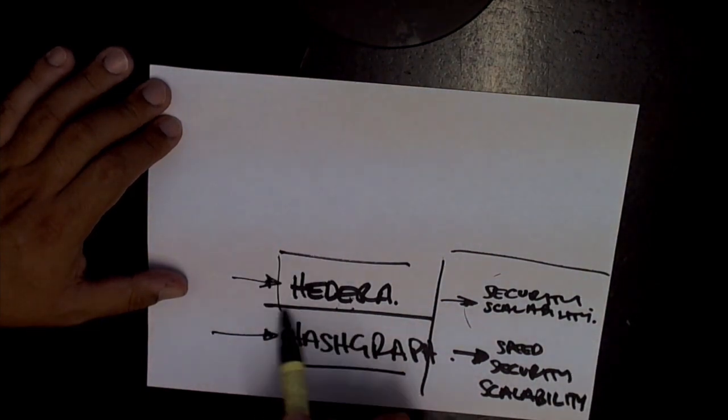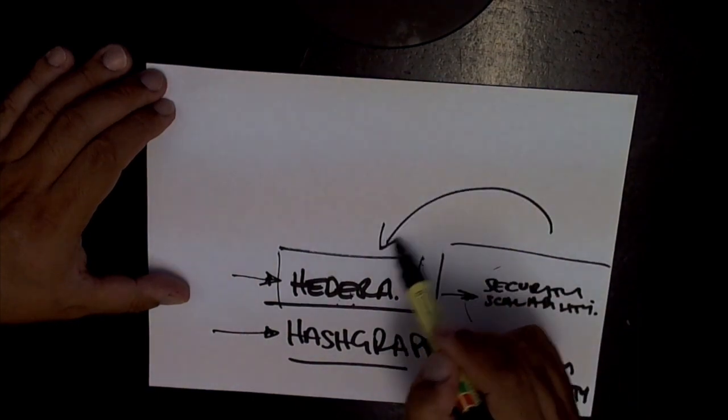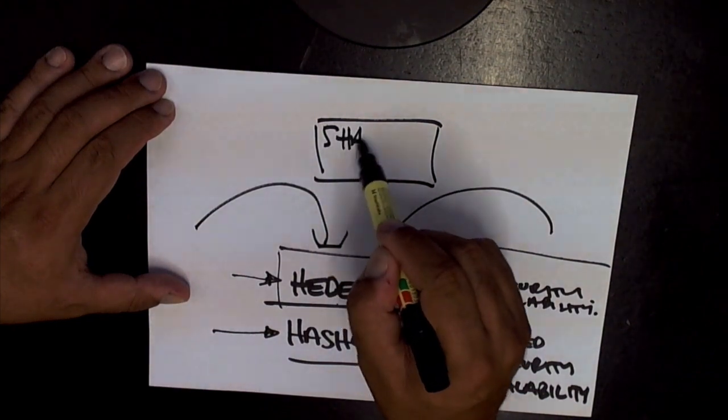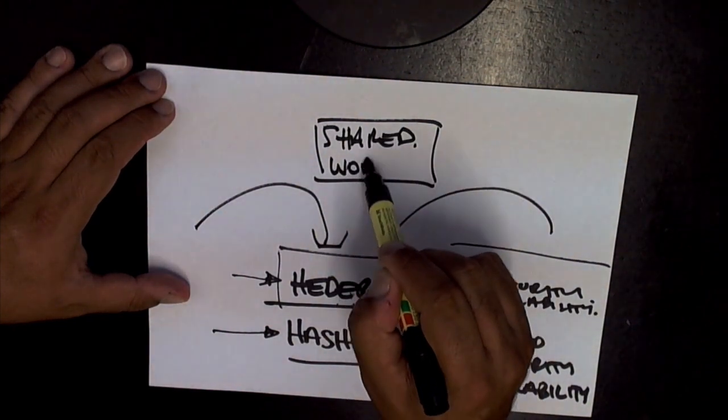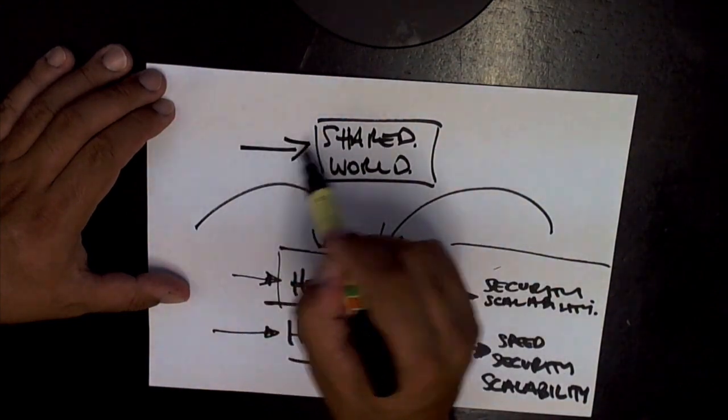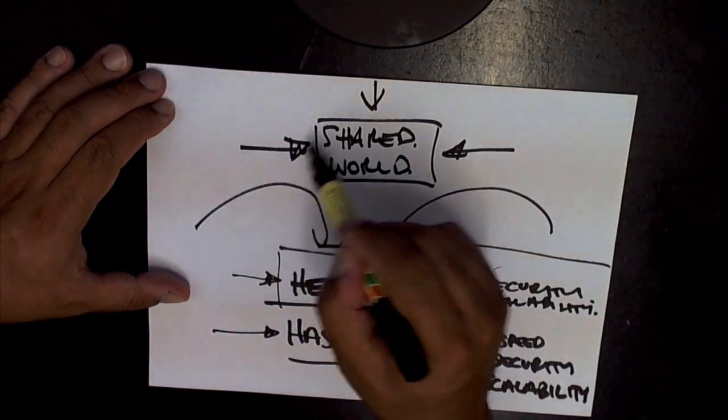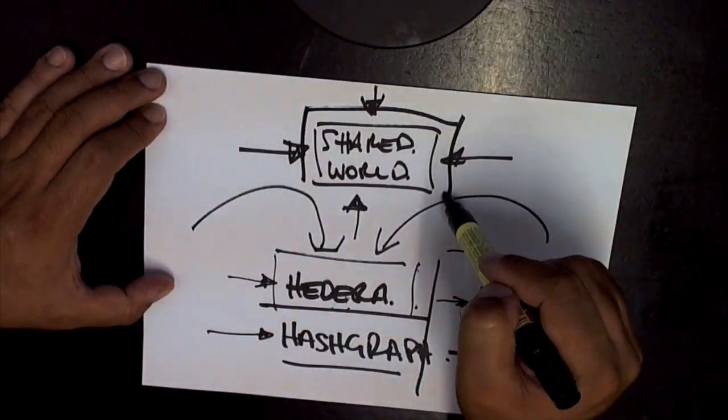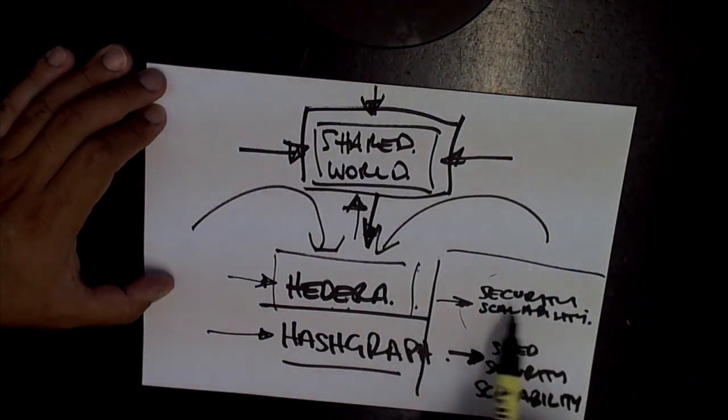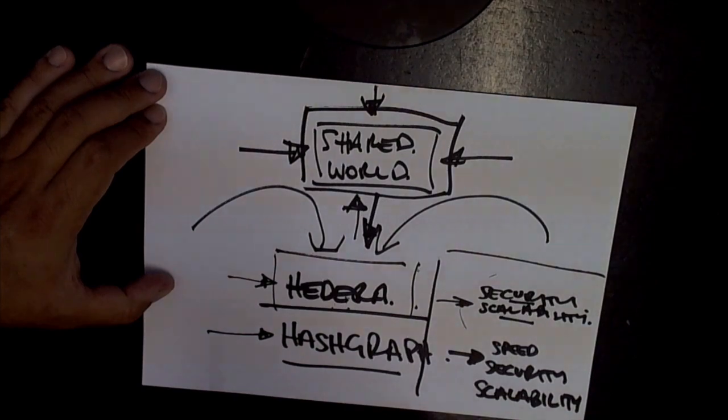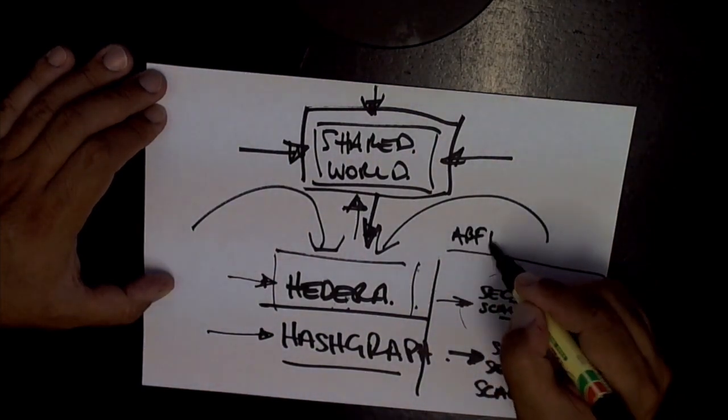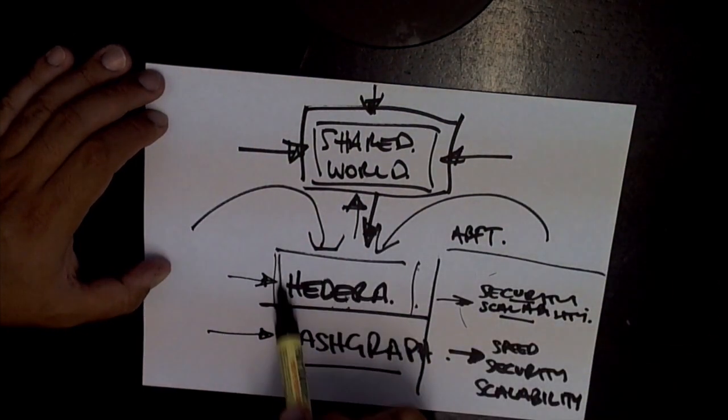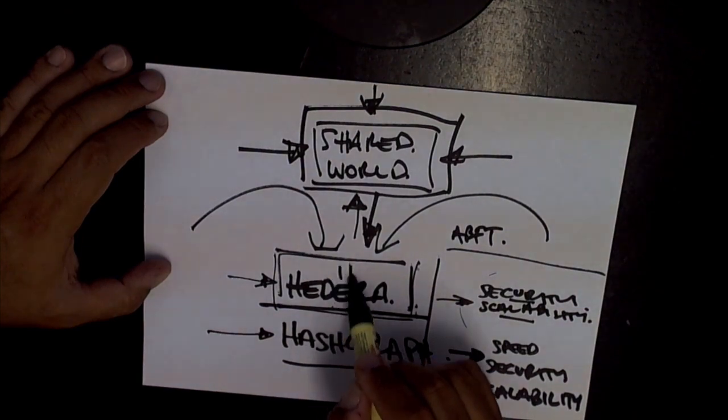The reason we need Hedera is so people can build their own apps on top and so that you can have a shared world with anyone you like. That is the main decentralizing part of this whole thing because that makes the internet decentralized - the fact that you can have a shared world on top of Hedera, which provides this through the inability to fork and provides ABFT security from Sybil and DDoS attacks.